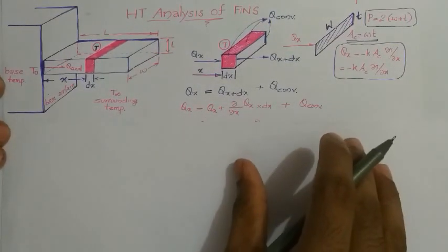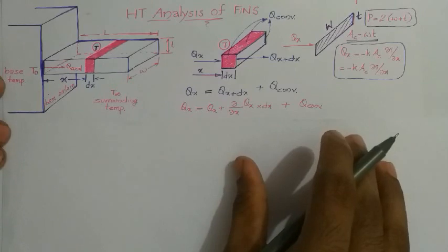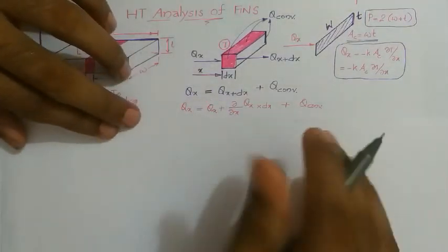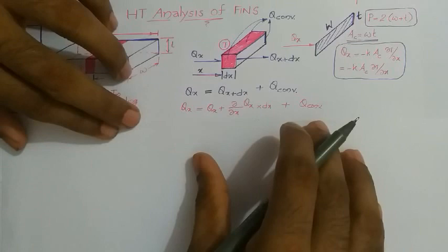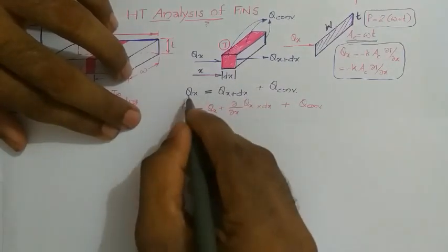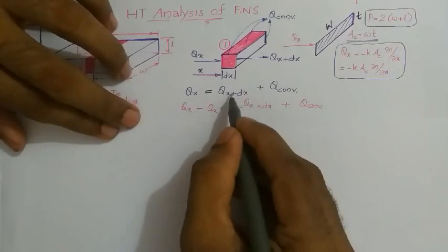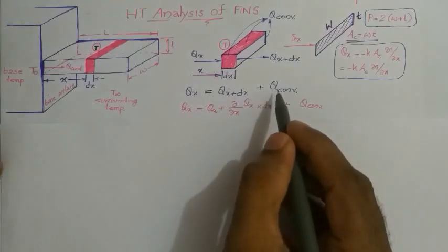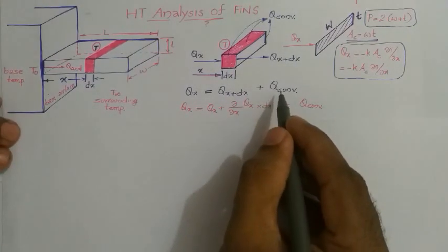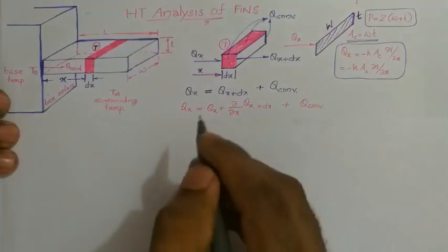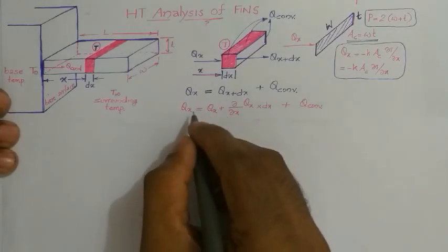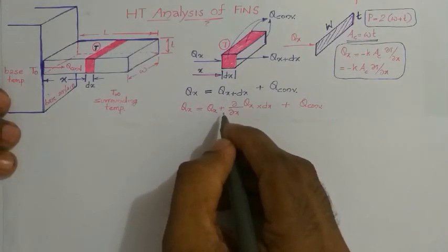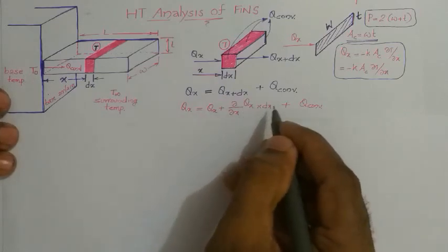By applying the heat balance, we derive the heat transfer equation for the fins. The amount of heat conducted in at x equals qx, which equals the heat conducted away plus the heat convected from the lateral surface. By applying Taylor's expansion, qx-plus-dx can be written as qx plus the partial derivative of qx with respect to x, multiplied by dx.